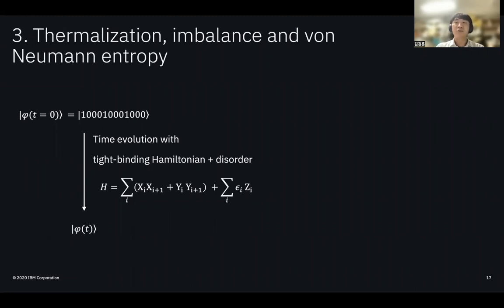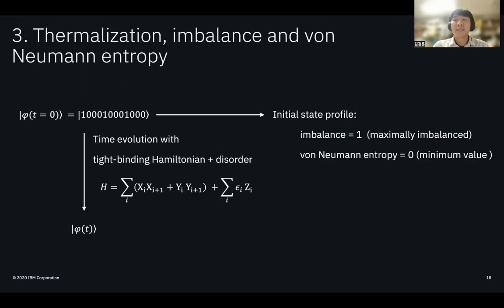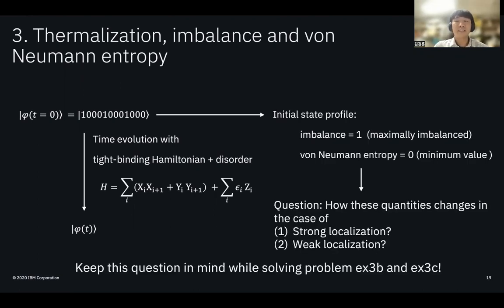Now we are ready to solve exercise 3b and 3c. This problem wants you to simulate the time evolution with tight binding Hamiltonian with several strengths of disorder while measuring the imbalance and von Neumann entropy. For initial state, since it is a product state and it only has even site population, von Neumann entropy is zero while imbalance is one.